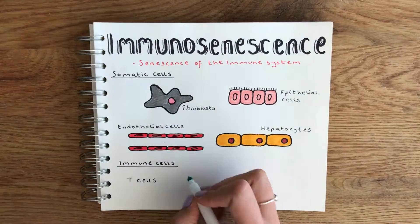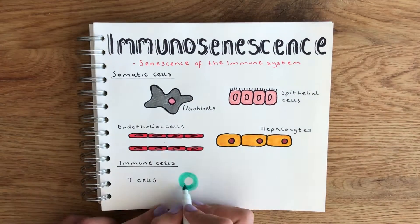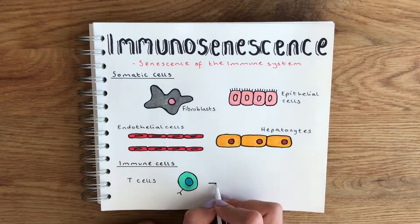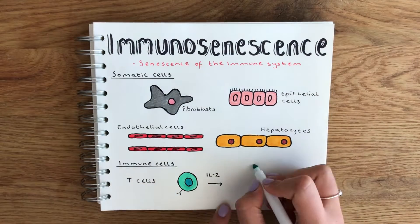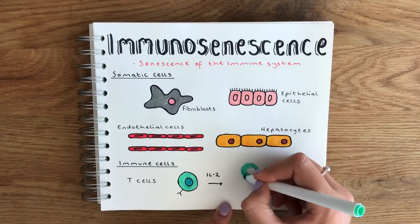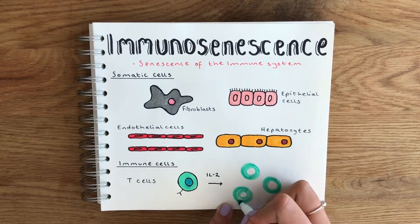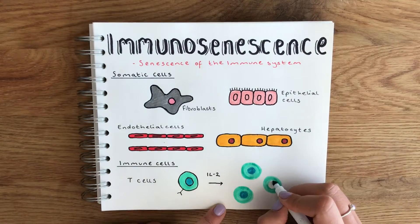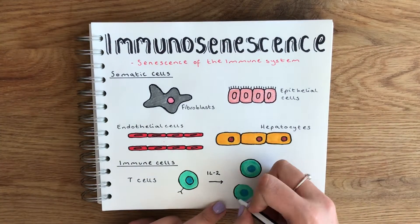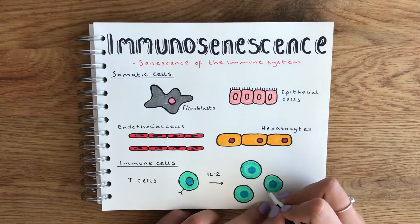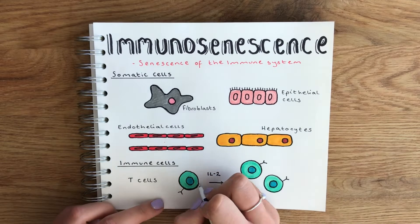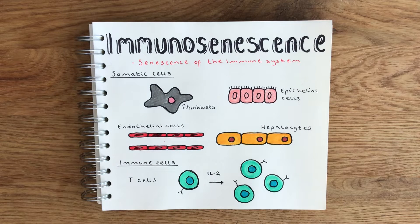During the same time that scientists were confirming senescence in other cell types, immunologists had actually discovered a novel cytokine which we now know as IL-2, and this promoted T cell proliferation in culture, meaning these cells were able to grow indefinitely. This gave immunologists the belief that immune cells were actually immortal.